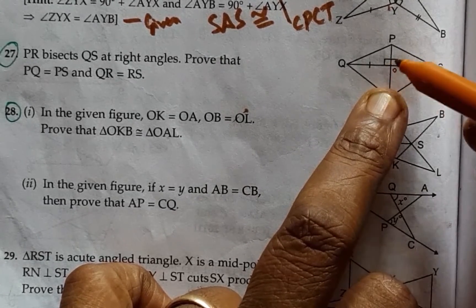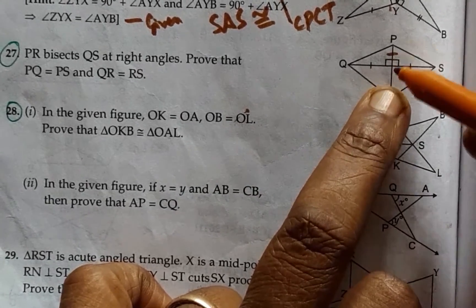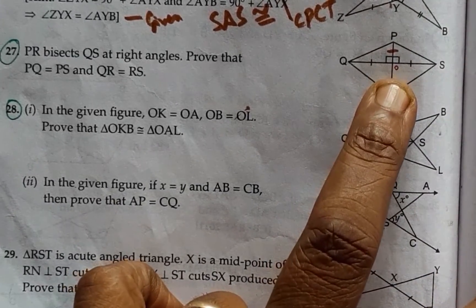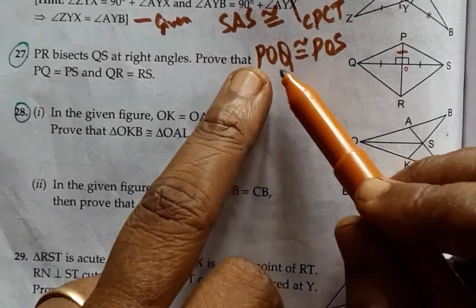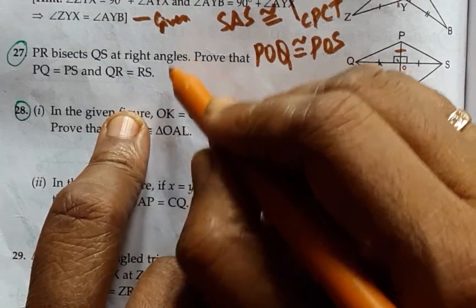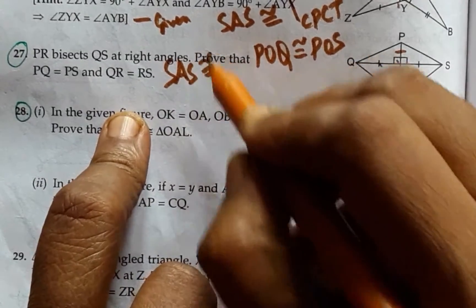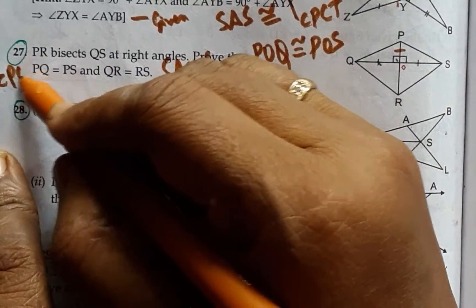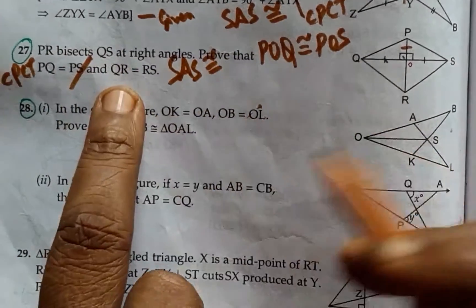Therefore, one included angle and this is common side for these two triangles. Therefore, if I name this center as O, I established POQ congruent to POS by side included angle and side congruency, SAS congruency. And therefore, I have PQ is equal to PS by CPCT. I have achieved this part.